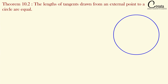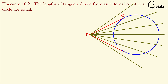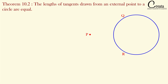Let's take a circle with an external point P. As we have seen in the introduction lecture, from an external point we can have only two tangents. All other lines from this external point towards the circle will be either a secant or a non-intersecting line. Only two lines can be tangent from an external point. So here PQ and PR are the two tangents from point P to our circle, and PQ and PR are the lengths of the tangents, which are equal.